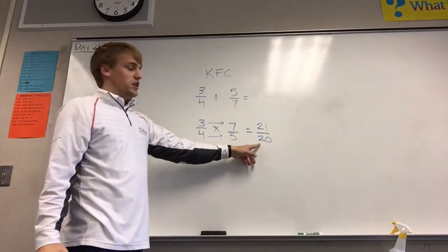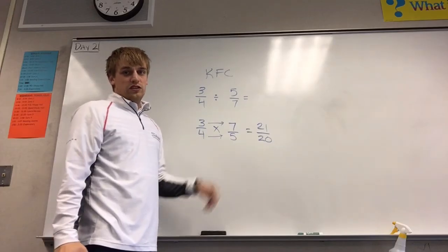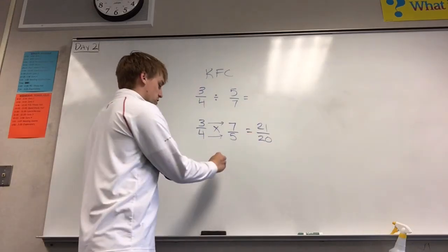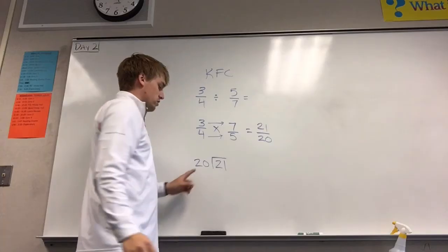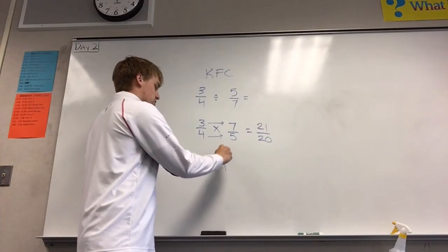This ends up being an improper fraction so in this case we're going to divide twenty-one divided by twenty. Twenty goes into twenty-one one time.